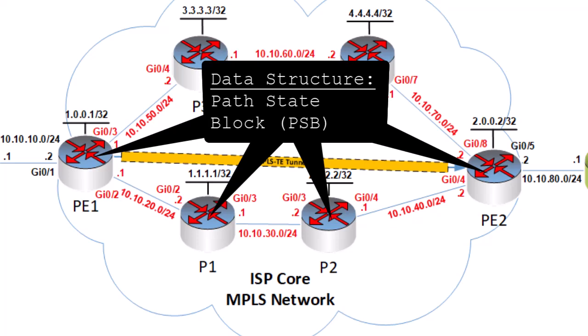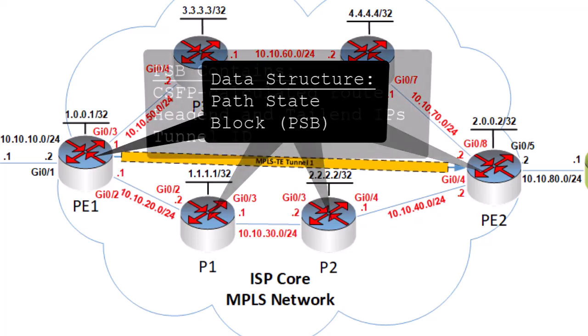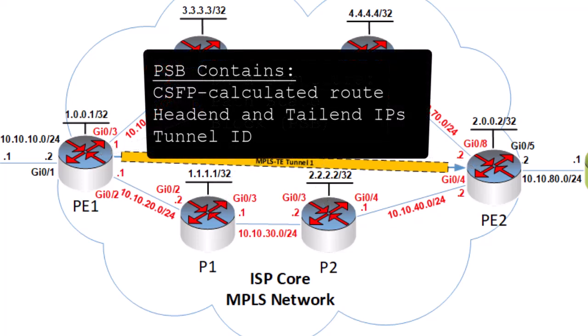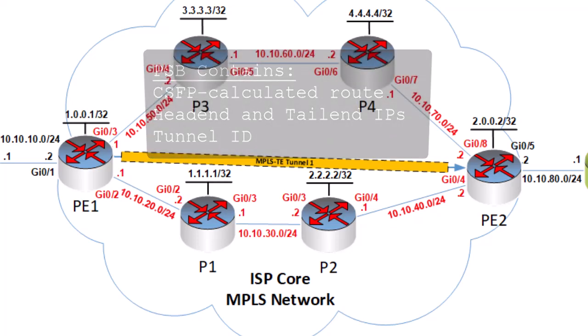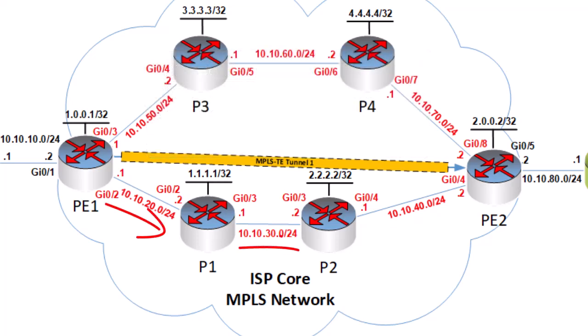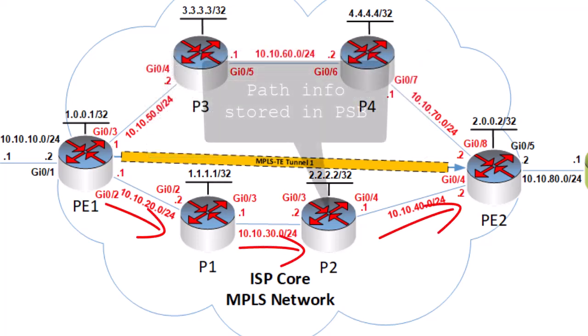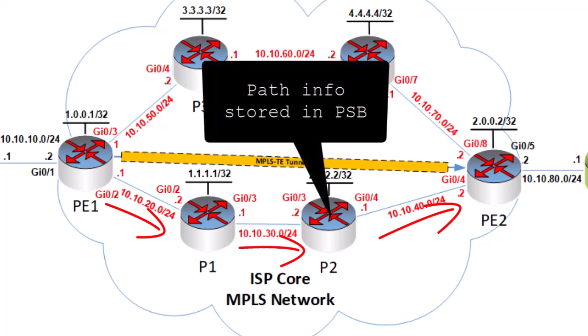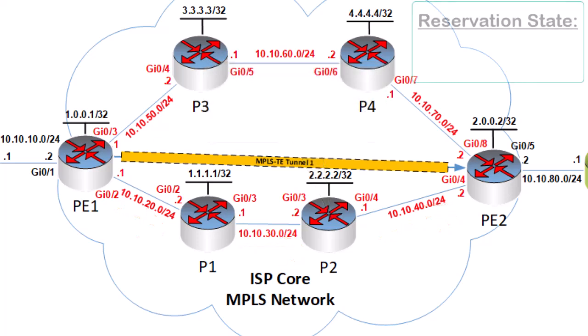Information contained within the PSB includes the route calculated by the constrained SPF algorithm that was run by the underlying IGP, as well as the IP addresses of the head end and tail end routers, and the tunnel ID. As signaling messages are sent from router to router, information from those signaling messages is stored within the PSB of each router. Thus each router maintains up-to-date information about the path state.